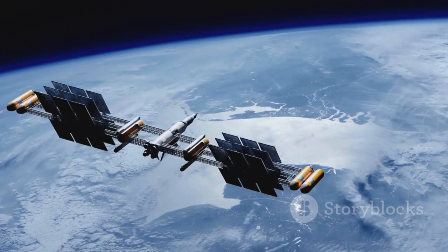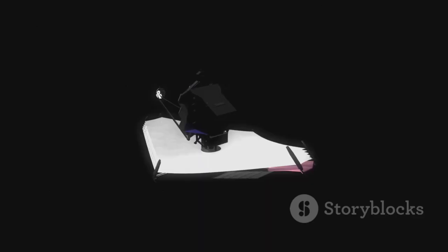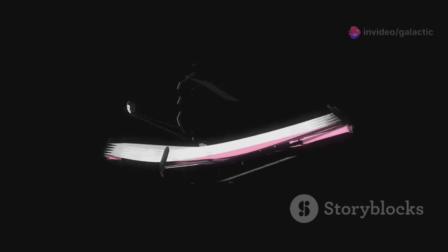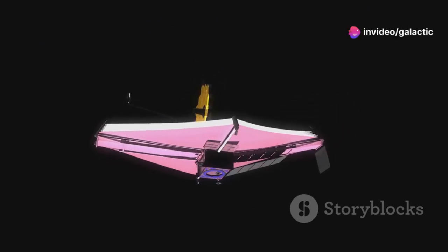The deployment of JWST was a complex and delicate process. Over the course of several weeks, the telescope unfolded its sunshield, mirrors, and instruments, each step meticulously planned and executed.